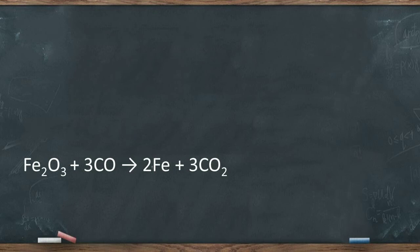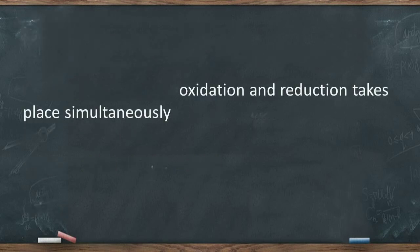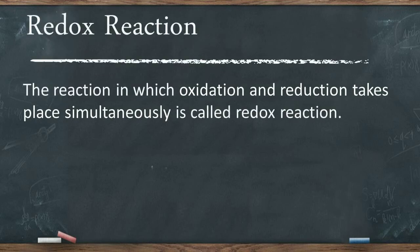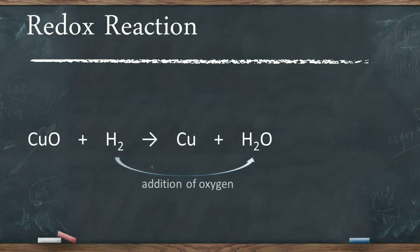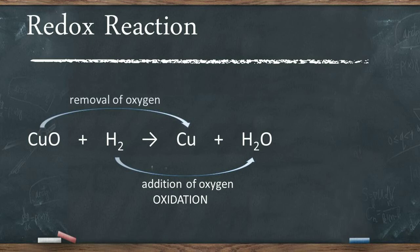In most reactions, oxidation and reduction occur simultaneously. Such reactions are called redox reactions. For example, the reaction of cupric oxide with hydrogen to form copper and water represents a redox reaction. In this reaction, oxygen is added to hydrogen to form water, so oxidation of hydrogen has occurred. At the same time, oxygen is removed from cupric oxide to form copper, so reduction of cupric oxide has occurred. As oxidation and reduction take place simultaneously, it is a redox reaction.